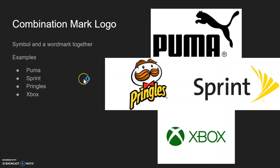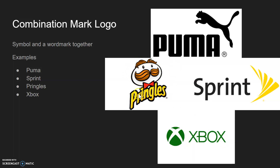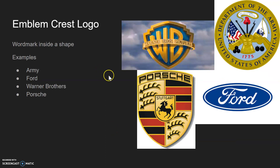The combination mark logo is a logo that has a symbol and a wordmark together. Examples would be Puma — they have the name and the Puma sprinting logo — the Pringles logo, which has the name and the guy, and Xbox, which has the name and the Xbox symbol.